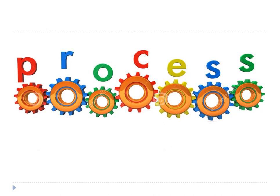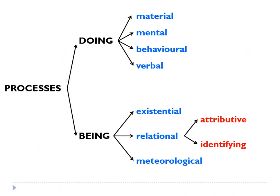Processes and participants are inseparable in the sense that a certain process will have a certain participant which will be different from the participants in other process types. Processes in transitivity are divided into two big ones: the processes of doing and the processes of being. Because this will take a long time to explain, I'm going to divide this material into two. Processes of doing will be covered now, and processes of being in the next video. The processes of doing will deal with material, mental, behavioral, and verbal.